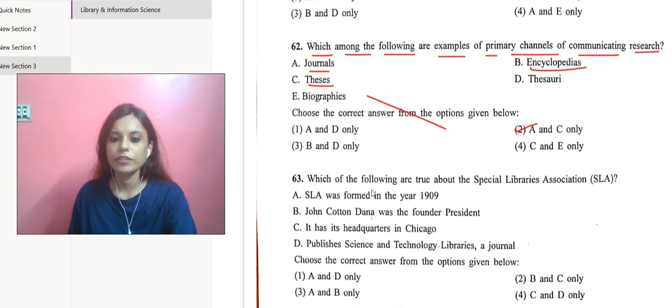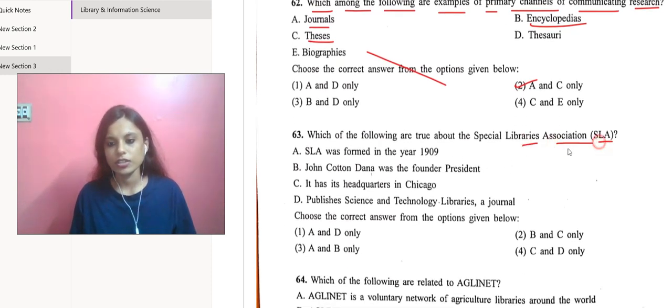Which of the following are true about the Special Libraries Association (SLA)? The Special Libraries Association traces its beginning from 1909, so the first point is correct. The gathering had been called by John Cotton Dana, so we can see it in point two. John Cotton Dana was the founder and first president of Special Libraries Association. So we can go with A and B only.